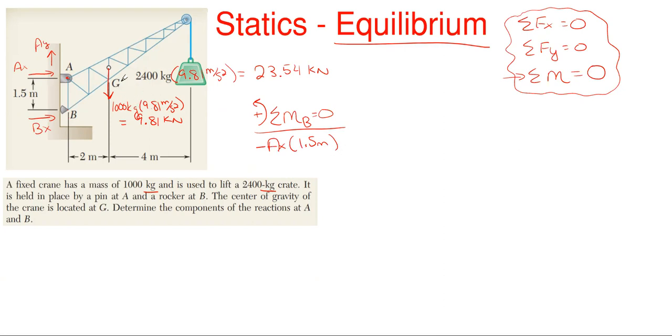And then I just have my mass and then my weight. Both of these will be rotating clockwise about point B. So let's take our mass first which is minus 9.81 kilonewtons of force times the distance to get it over to B which is 2 meters, and then minus 23.54 kilonewtons of force times the total distance to get it over to B which is 6 meters.